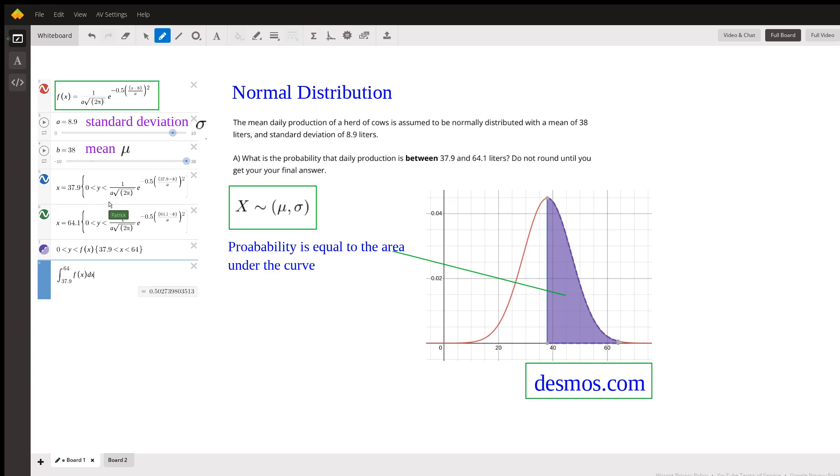If you go there and play around a little bit, try to put these equations in and see if you can produce this. One thing here is that the standard deviation is given by the letter 'a', the mean is given by the letter 'b' instead of mu and sigma. So anyway, we put those in and voila!